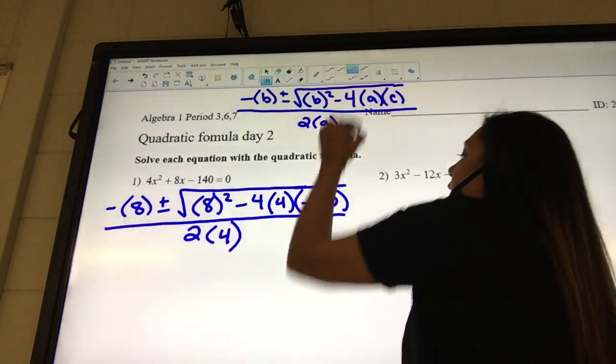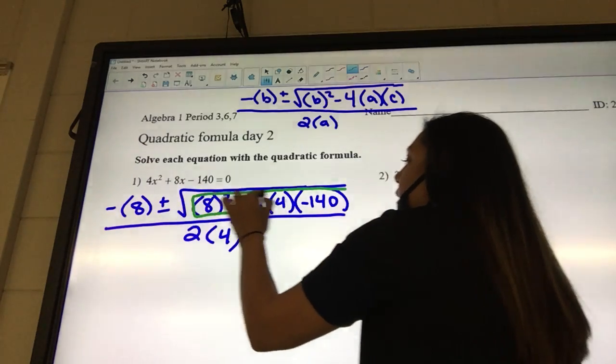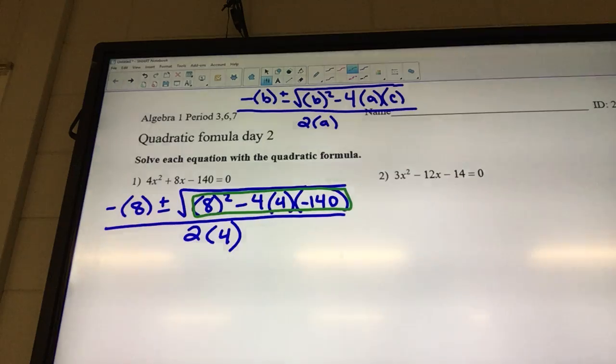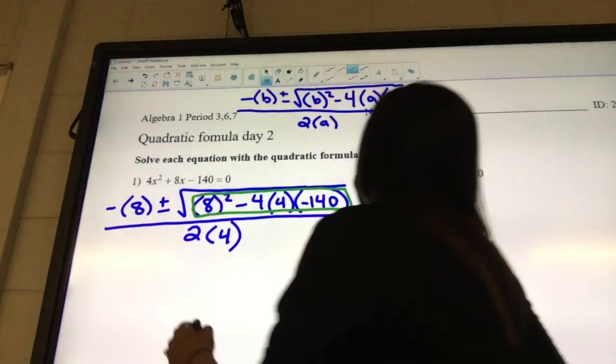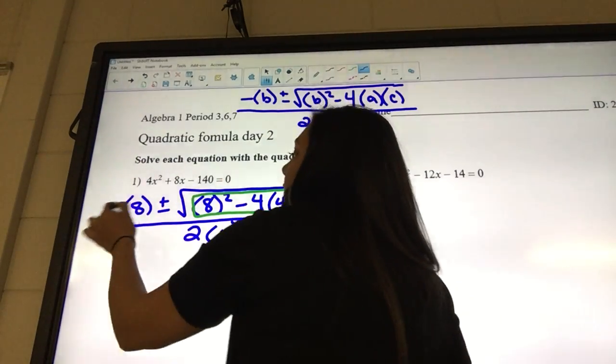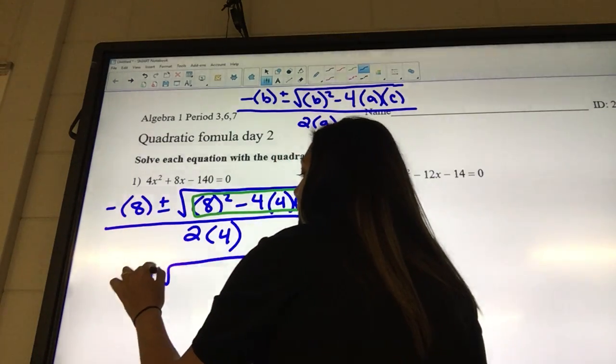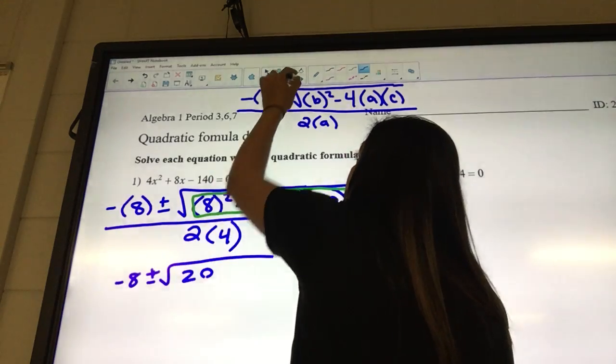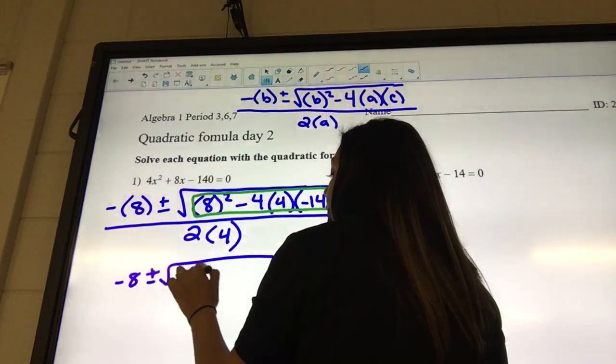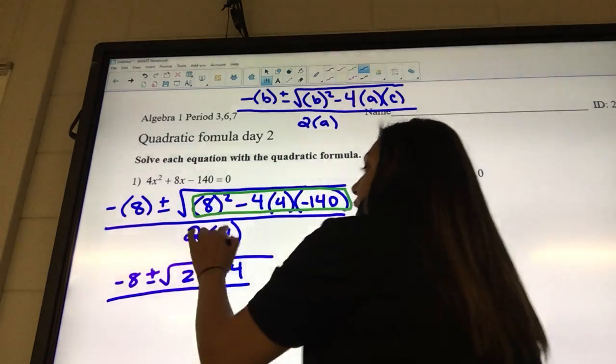Okay, so on your calculator, this is what you need to type in underneath the square root and see what you get. 2,304. What are you going to get for this outside? Negative 8 plus or minus 2,304 over what? 8. Over 8, 2 times 4 is 8.